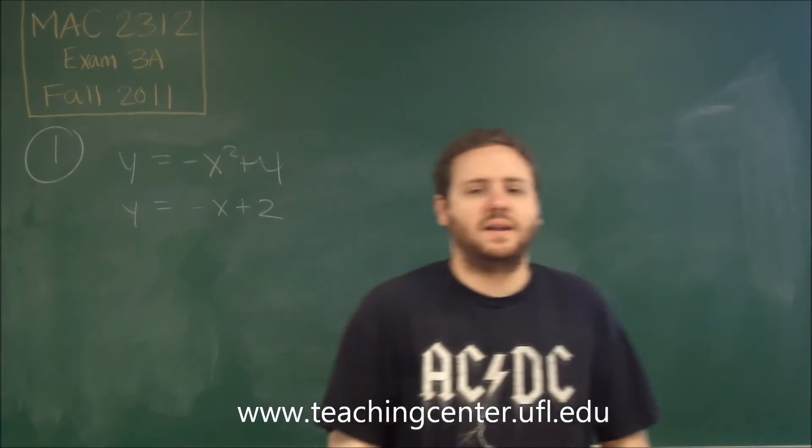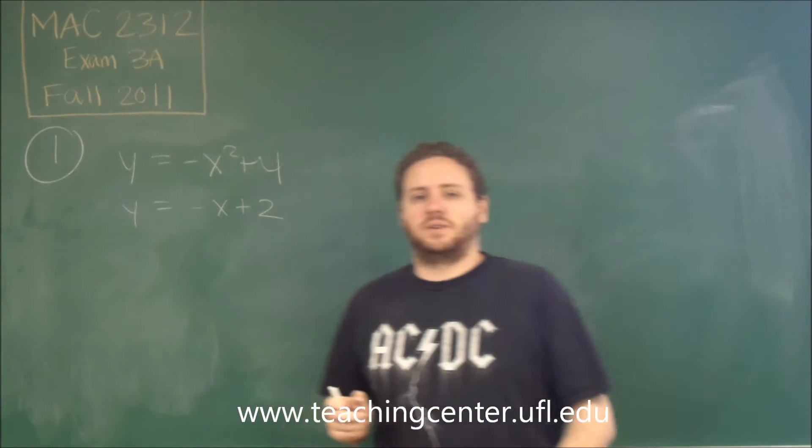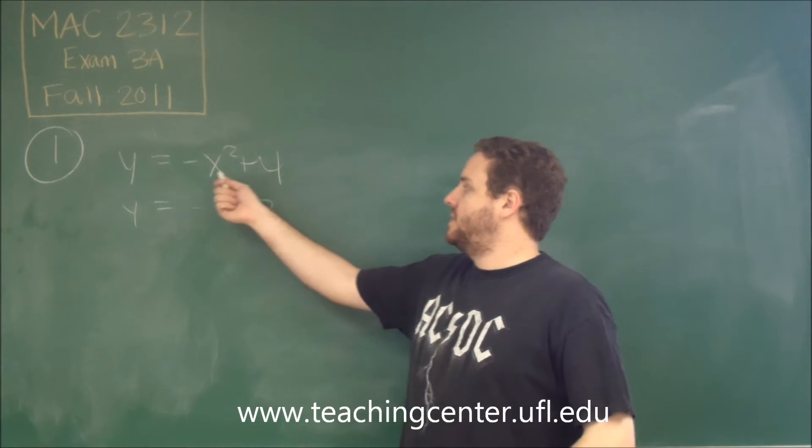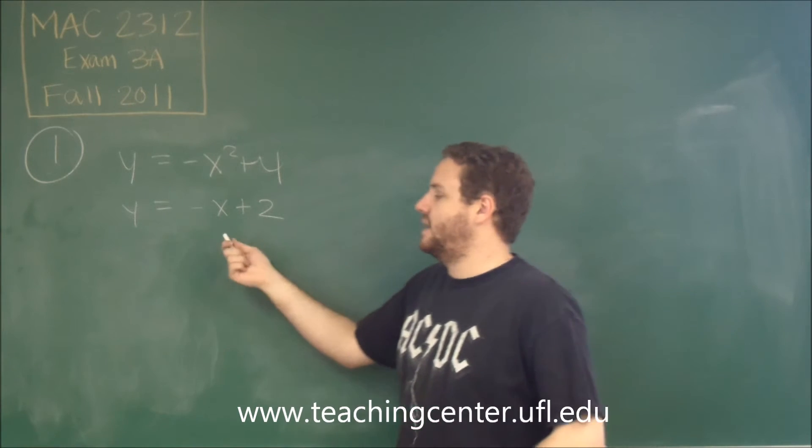So one thing that can help you out in these types of problems is that if you're looking for the area bounded by these curves, let's think about what shape these are. The first curve is a parabola, and it's a parabola that opens downward, and the second one is a line.